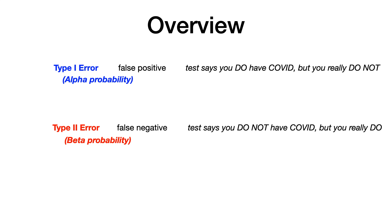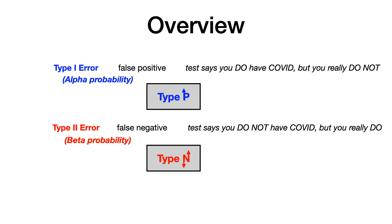Another way to remember this is with a mnemonic. Think about type P and type N — P for positive because type 1 is a false positive, and N for negative because type 2 is a false negative. If you look at how many vertical lines are in the letter P or the letter N, it corresponds to 1 and 2. There's one vertical in the letter P, which reminds you that false positive goes with type 1 error, and in the letter N there are two vertical parts, reminding you that N for false negative goes with type 2 error.